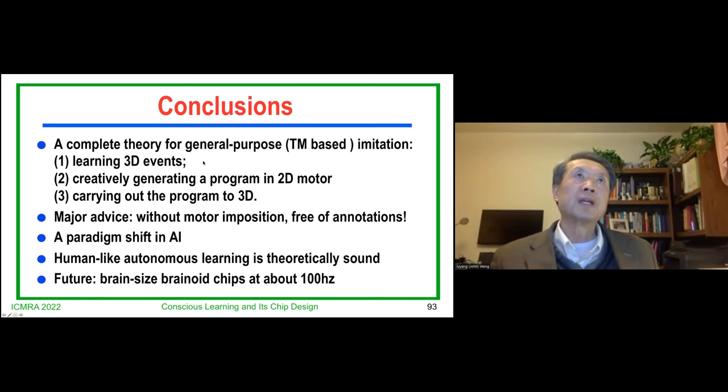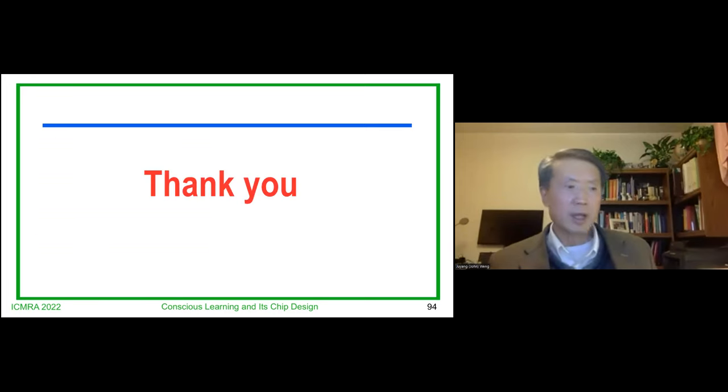The conclusion was that a complete theory of general purpose, Turing machine-based imitation, learn 3D events, create general creativity using images and a 2D model, carry out program to 3D. 3D to 2D to 3D. The major advice here to take home is without motor imposition, free of annotation. Don't follow ImageNet. ImageNet with annotation, that's a dead end. It's a paradigm shift in AI. Human-like autonomous learning is theoretically sound. The future is brain science, brain noise chip at about 100 hertz. That's a tremendous challenge, engineering. Thank you very much.